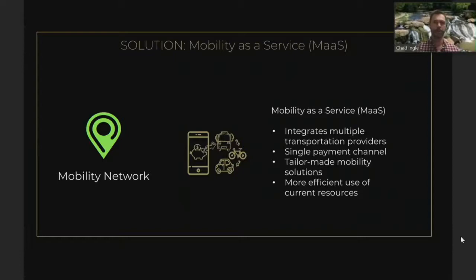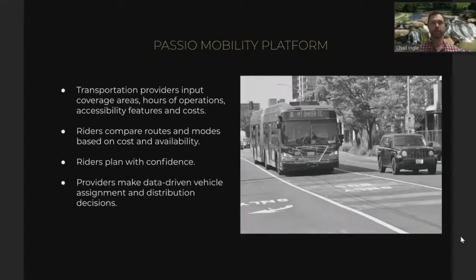Mobility as a service takes all the different data sources and multiple payment channels and packages it into a single rider-facing solution. The rider enters their trip information and mobility requirements, like wheelchair or service animal, and the app is able to look at all the providers and present a list of options to complete the trip. Each rider will have personal preferences in their trip selection process, like cost, time, weighting, or walking distance. The rider can sort the options based on the parameters most important to them. To build the network, transportation providers will input their service area and hours into a single database.